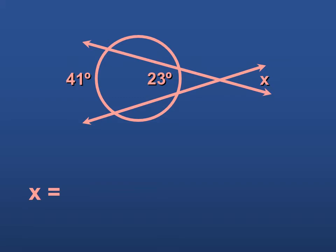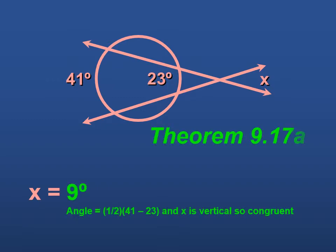So here we want to find X. We know that this angle here is going to be equal to X because they're vertical angles. And we can figure out this angle by taking the difference of 41 and 23 and taking half of it. So 41 minus 23, and half of 41 minus 23 gives us 9.